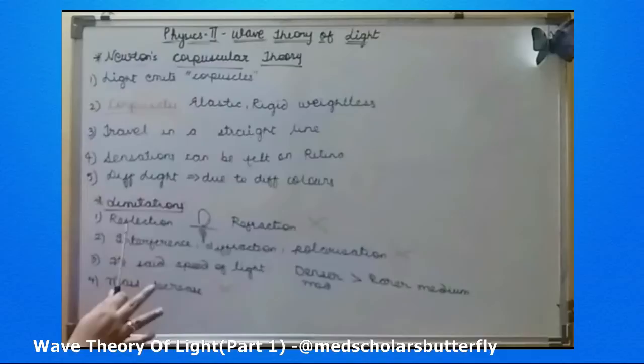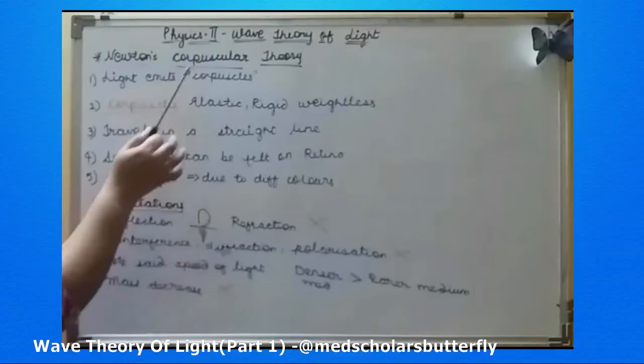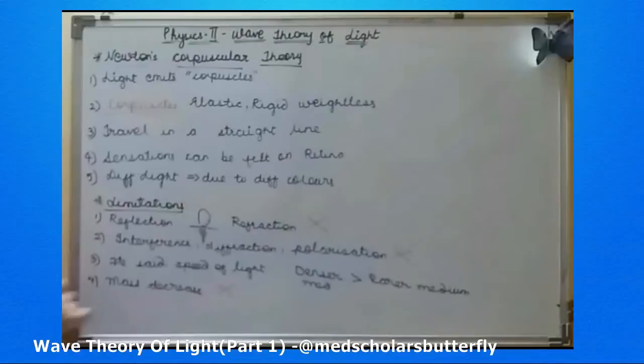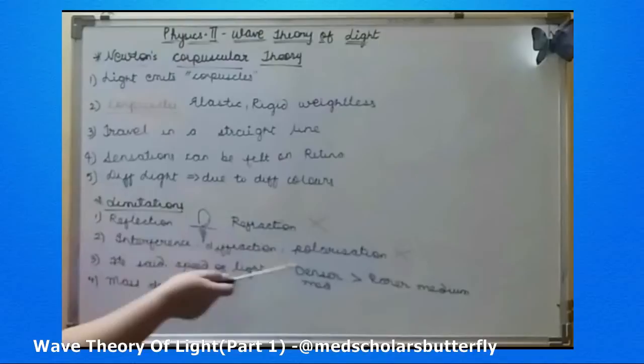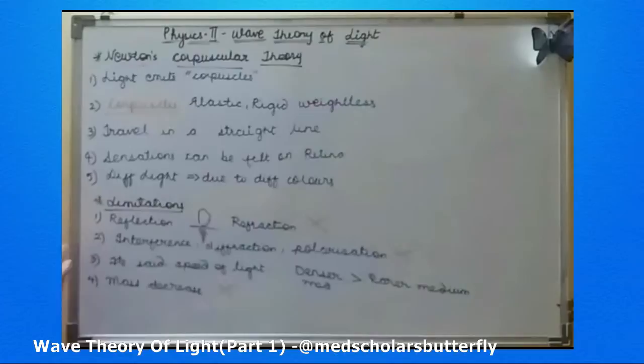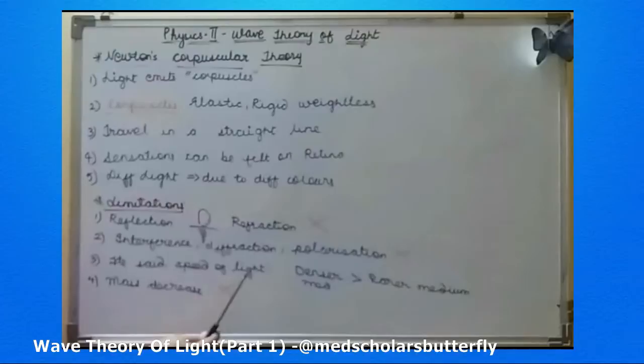However, there are certain limitations of Newton's corpuscular theory. He failed to explain reflection, refraction, interference, diffraction, and polarization. He said that light emits corpuscles that travel in a straight line — if they travel in a straight line, how is reflection possible, or how is refraction and diffraction possible? He also failed to explain polarization. Then he said that the speed of light in a denser medium is greater than in a rarer medium, which was later proved to be wrong by Foucault.